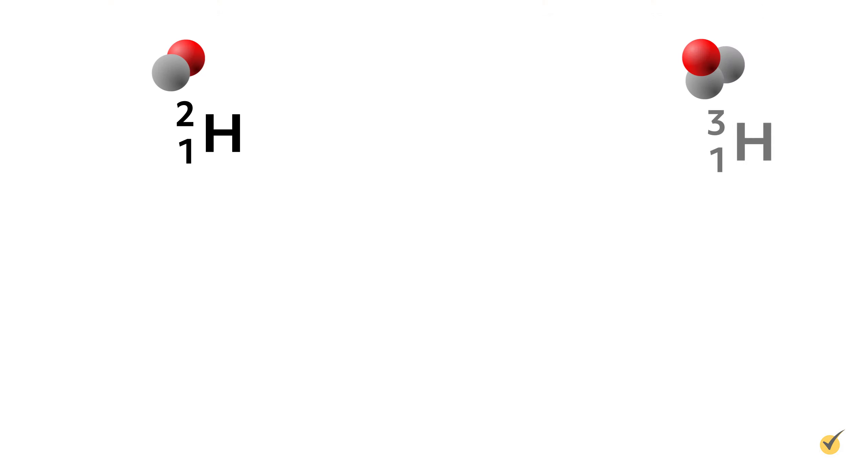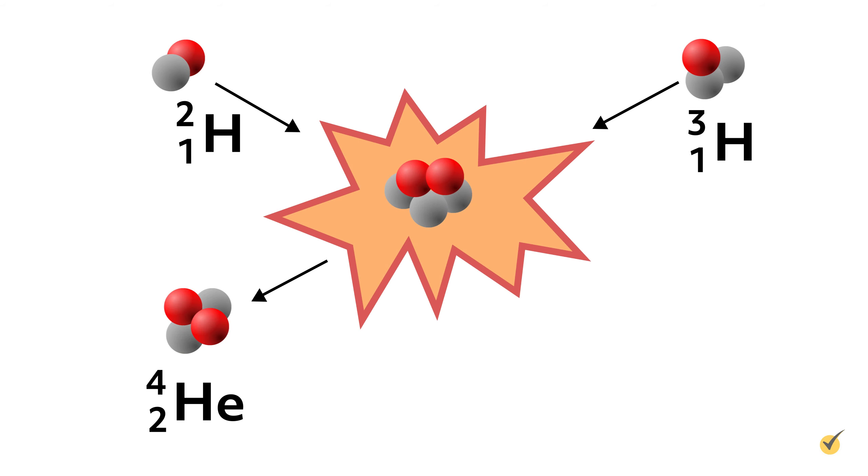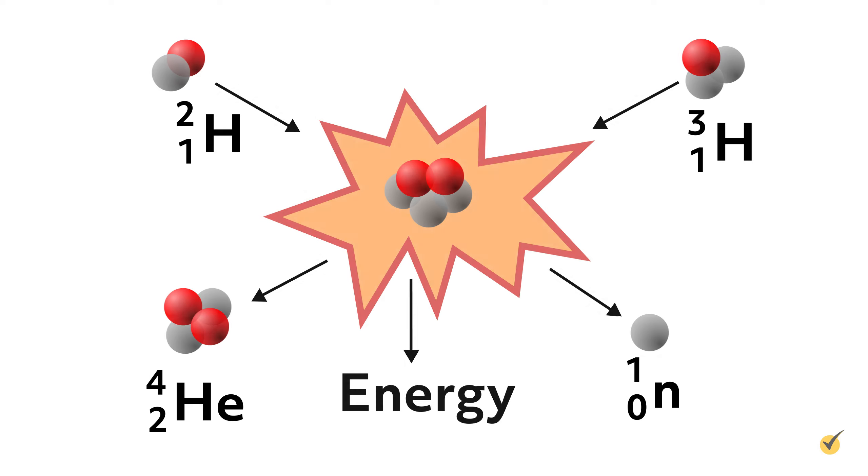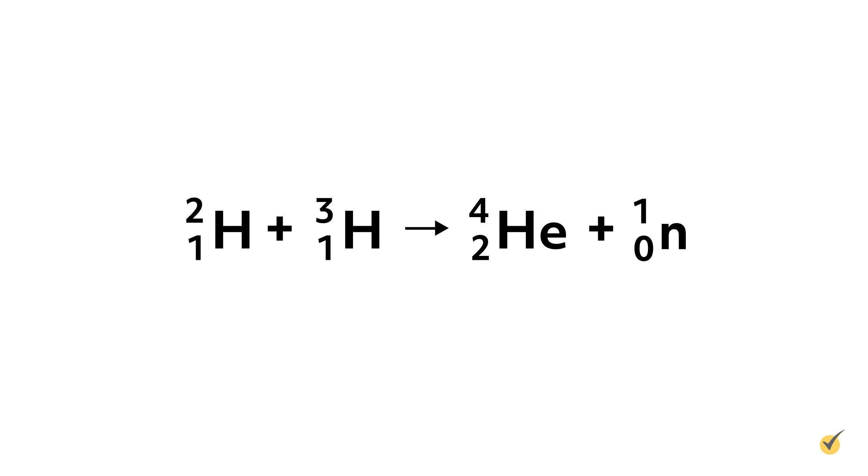For example, consider this nuclear fusion reaction where two heavy isotopes of hydrogen, deuterium and tritium, fuse to form helium and a highly energetic neutron. We have maintained the same standard format used for a chemical equation with the reactants on the left side and products on the right. But for each species, along with the atomic symbol, we have now included the mass number and atomic number. Because the mass number is the total nucleons, we get an indirect count of the neutrons as well. Including this information also helps us check the mass and charge balance of our nuclear reaction.